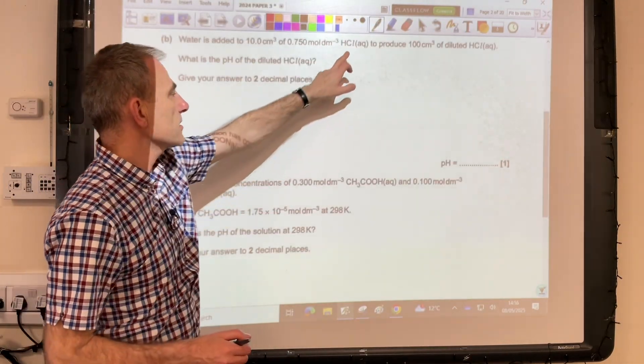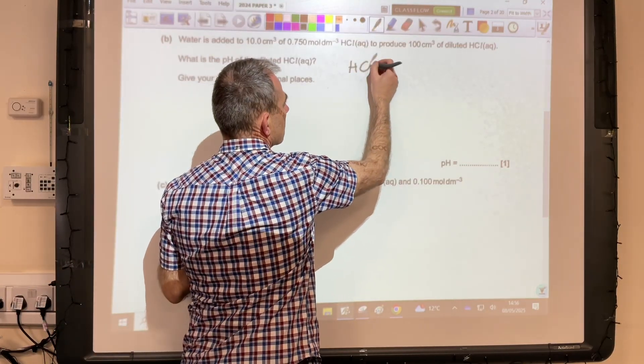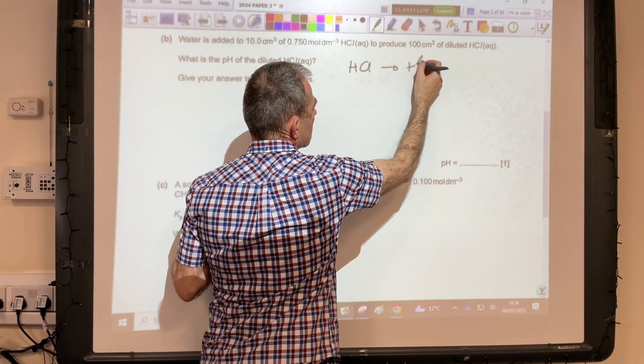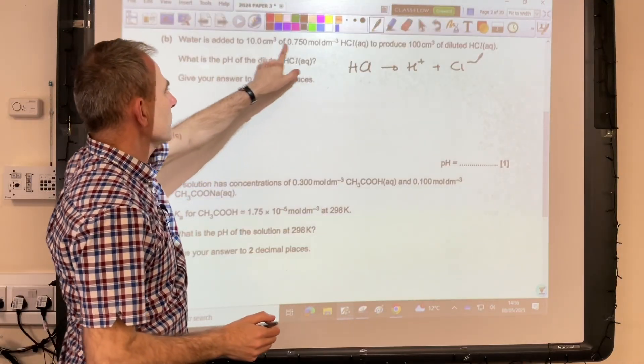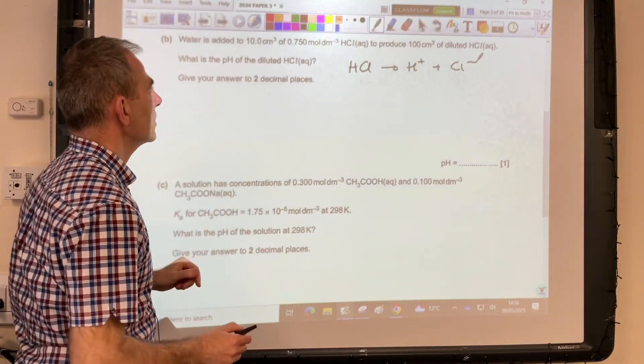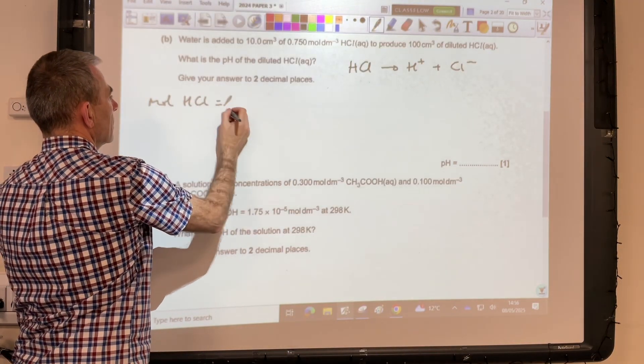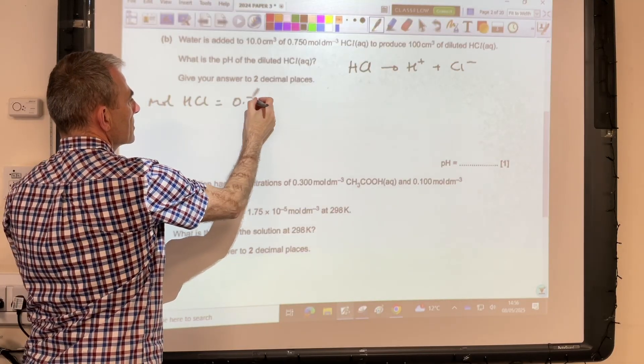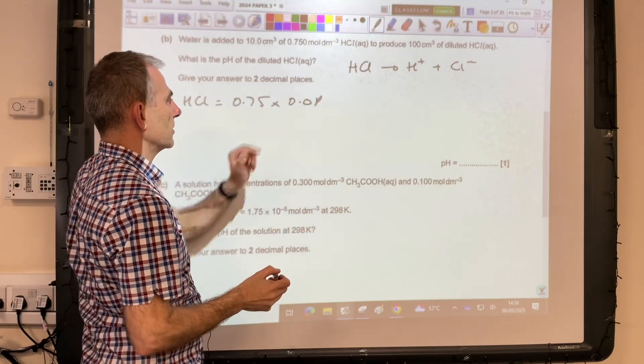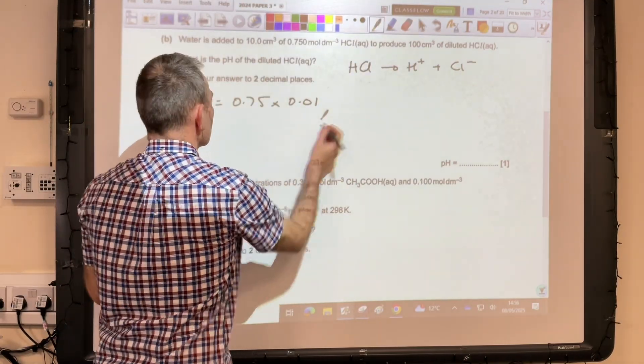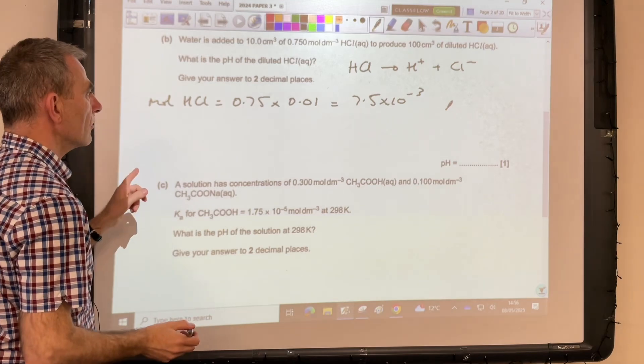Moving on to Part B: What's the pH of this HCl solution after dilution? First thing we need to say is HCl is a strong acid, so it goes to its ions like this. Next thing I'm going to do is work out how many moles of HCl have actually been used in the experiment. Moles of HCl is concentration times volume: 0.75 multiplied by 0.01 dm³. 10 cm³ is that many dm³, so that comes out at 7.5×10⁻³.